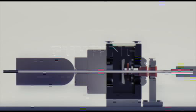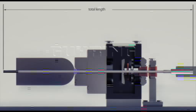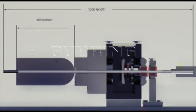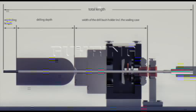The length of a gun drill for a gun drilling machine is defined by the following parameters: the drilling depth, the re-grinding length, the width of the drill bush holder including the sealing case, the width of the steady rests, and the length of the driver.